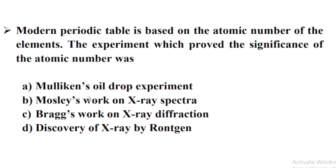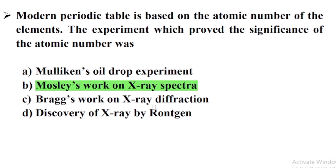The modern periodic table is based on the atomic number of the elements. The experiment which proved the significance of the atomic number was — Option B: Moseley's work on X-ray spectra.